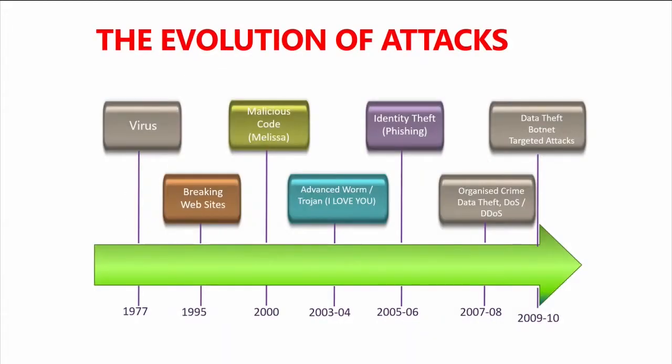Let's talk about the evolution of cyber threats. In 1977 we had just viruses. The first self-spreading virus ever spread widely in university networks in the States — it was an experiment to see if software could replicate itself to other computers using a glitch in the sendmail system. That worked very well and we remember it as the first self-spreading virus.